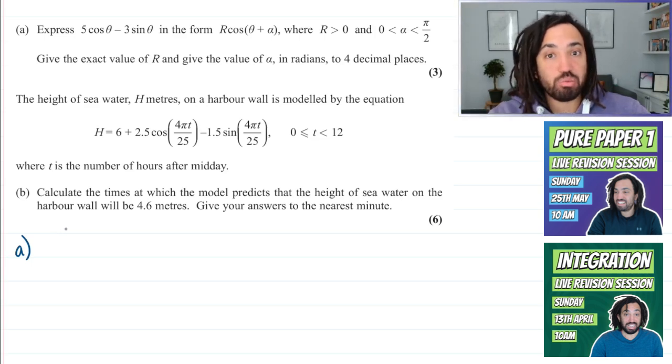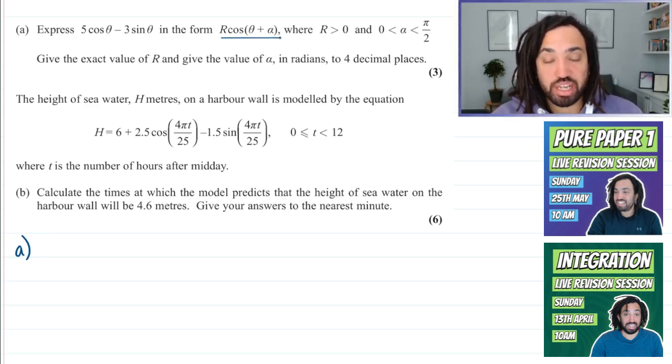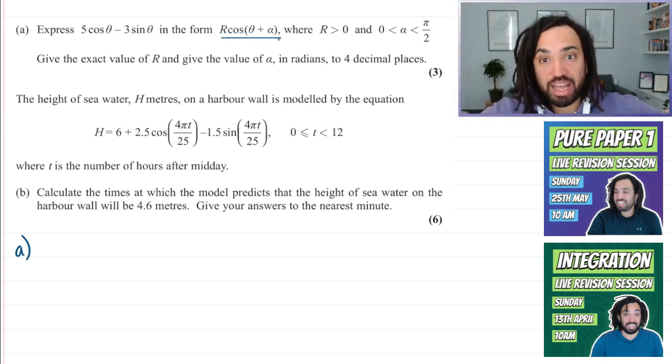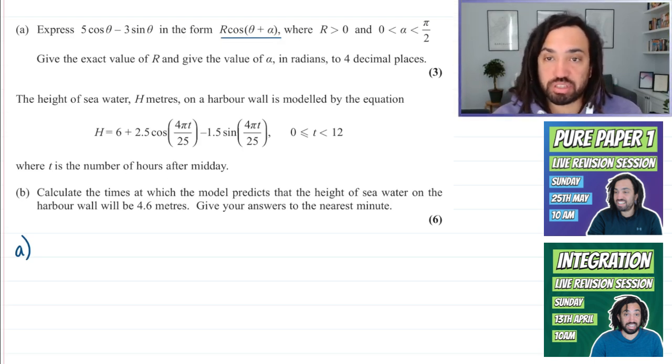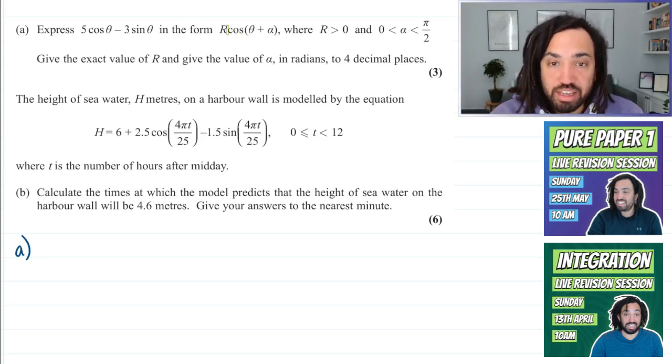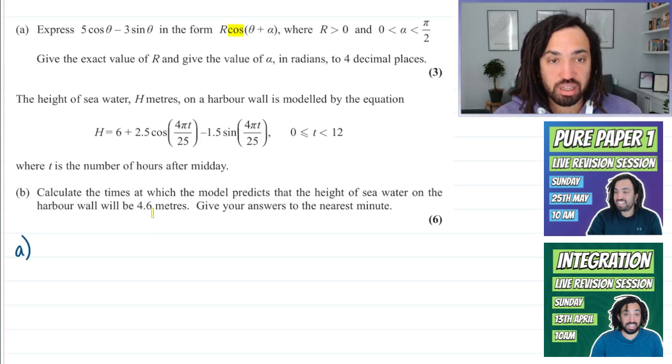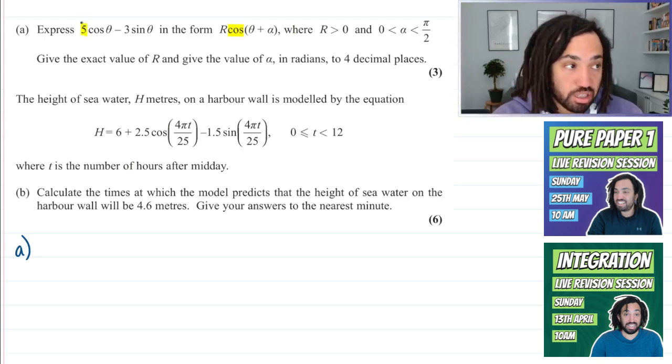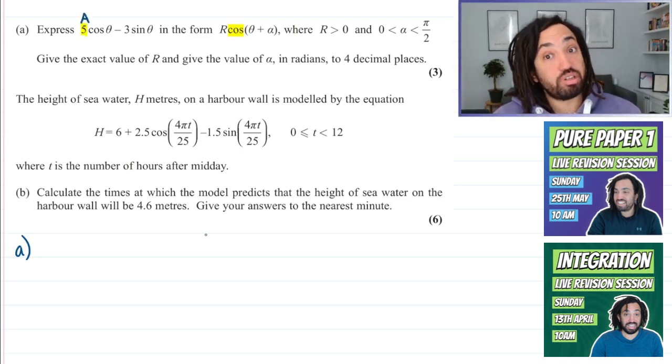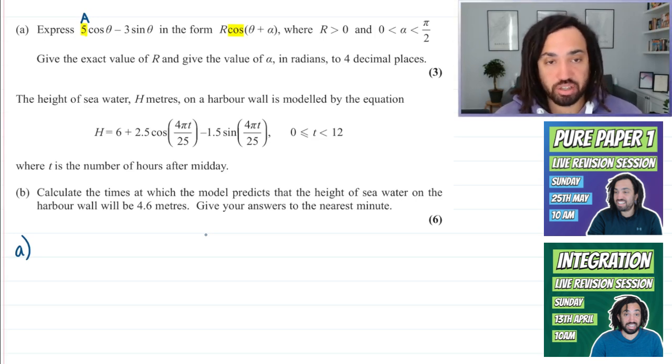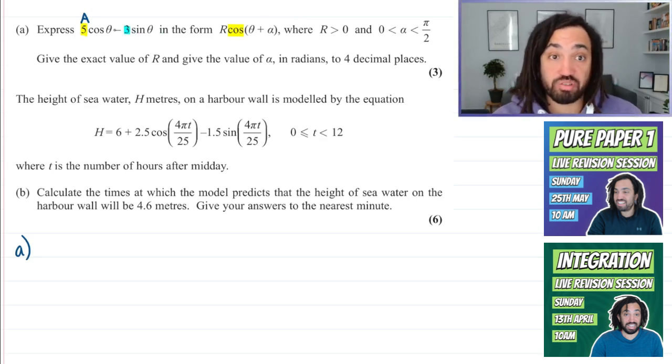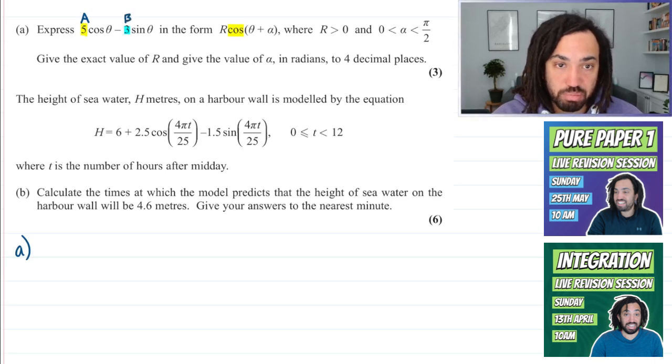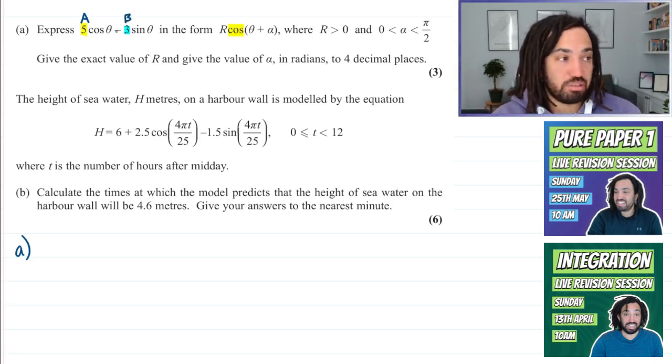I know a shortcut here. Some people might want to expand this out using the compound angle formula and then compare coefficients and solve for R and alpha. I don't bother doing that because I know a little shortcut which works every time. If you are converting into cos, you must label the cos coefficient a. If you are converting into sine, you would label the sine coefficient a. Because we are converting into cos, we've labeled the cos coefficient a.